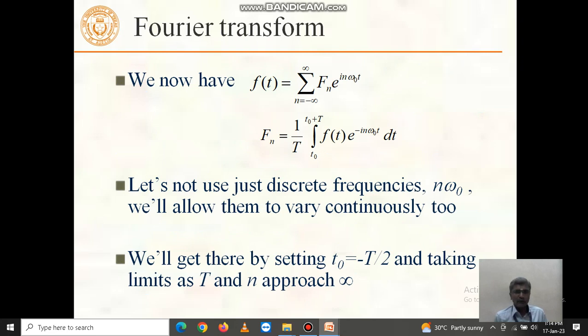We now have f(t) equal to summation n equal to minus infinity to plus infinity f_n into e power i n omega naught t, and capital F_n equal to 1 divided by t into integral t naught to t naught plus t, f(t) into e power minus i n omega naught t dt.